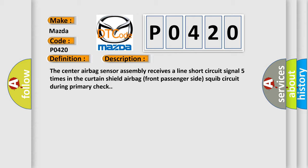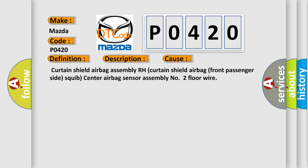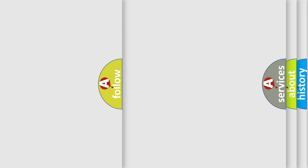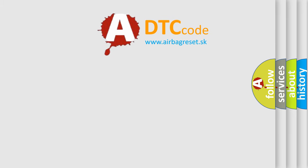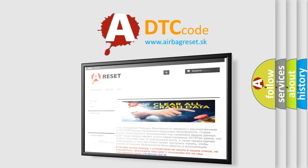This diagnostic error occurs most often in these cases: curtain shield airbag assembly RH, curtain shield airbag front passenger side squib, center airbag sensor assembly, number two floor wire. The airbag reset website aims to provide information in 52 languages. Thank you for your attention and stay tuned for the next video.